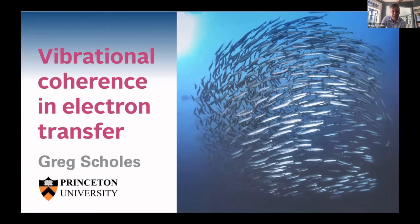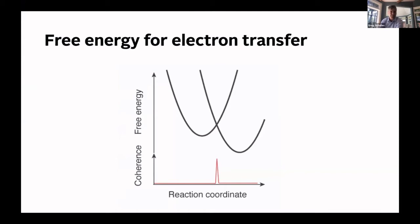So this is a slightly more focused title that will make sense shortly for this presentation. Just to start with, as you're all familiar with, the rates of electron transfer reactions are generally described by transition state theory, also known as Marcus theory. We can think of tuning them by changing the driving force for the reaction or changing the solvent reorganization energy.